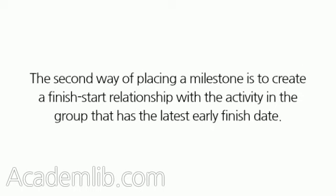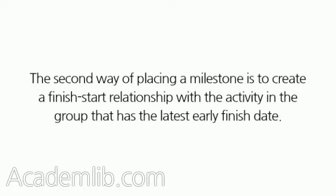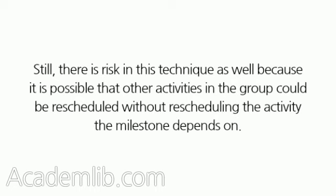The second way of placing a milestone is to create a finish-start relationship with the activity in the group that has the latest early finish date. In this way, the milestone will be rescheduled if this activity is rescheduled. Still, there is risk in this technique as well, because it is possible that other activities in the group could be rescheduled without rescheduling the activity the milestone depends on.